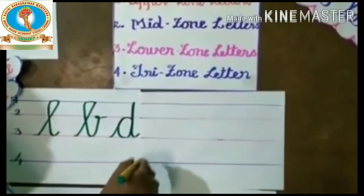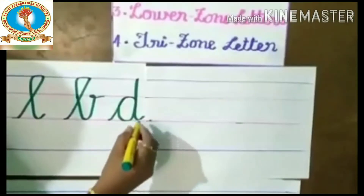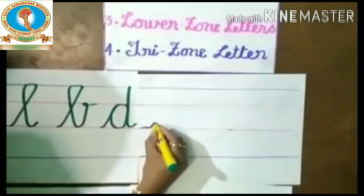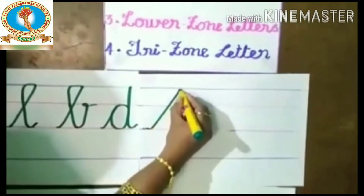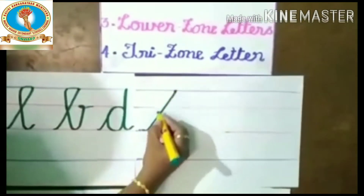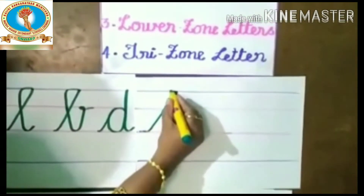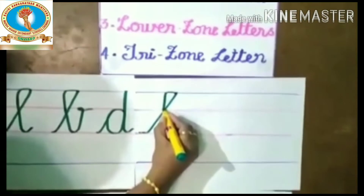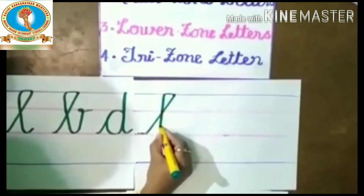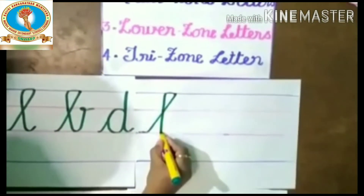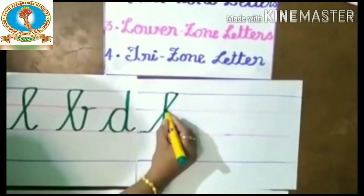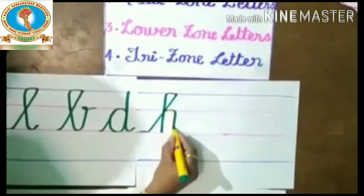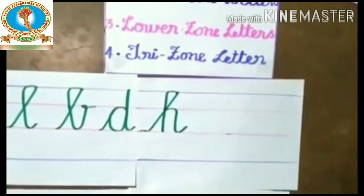The next letter is H. Go up, put the slanting line, and cutting point in the second line. Then press the third line, then go up to the second line. A small curve. H.